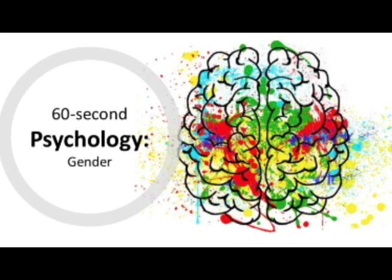Gender dysphoria relates to the term transgender, which is when a person's gender does not correspond with their biological sex. For example, if somebody is biologically female but identifies as male, this is usually due to gender dysphoria — a person experiences discomfort with the gender assigned to them at birth due to their biological sex, and may come to identify as transgender.